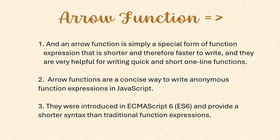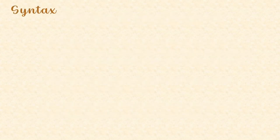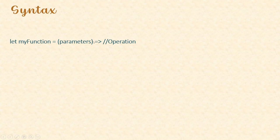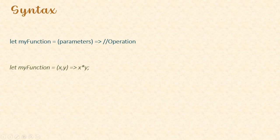Before understanding arrow functions, you should have a basic understanding of function expressions. The syntax is: you create your function, pass your parameters, use the arrow symbol, and then perform the operation. We will see how to write multiple lines practically. As a basic example, if I want to multiply two numbers, I pass x and y as parameters and perform x times y.